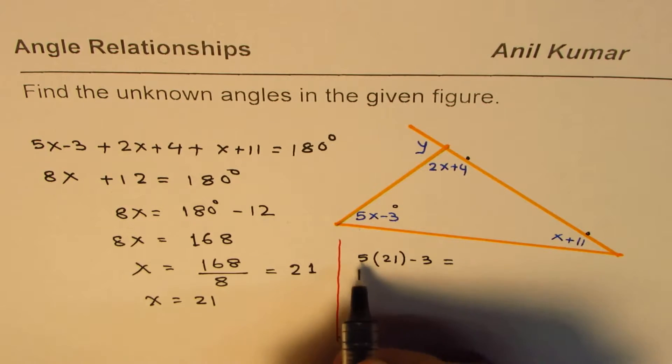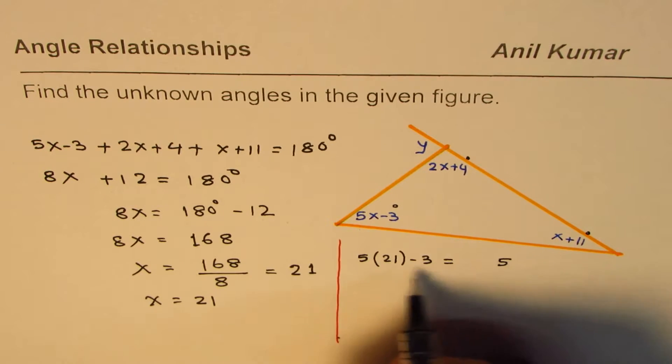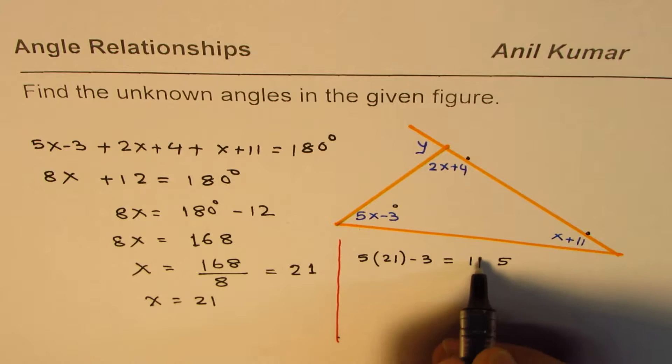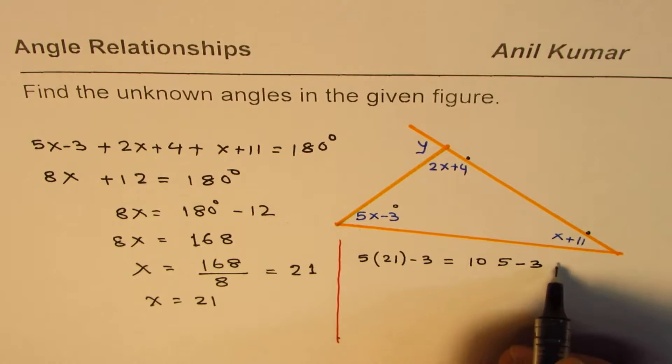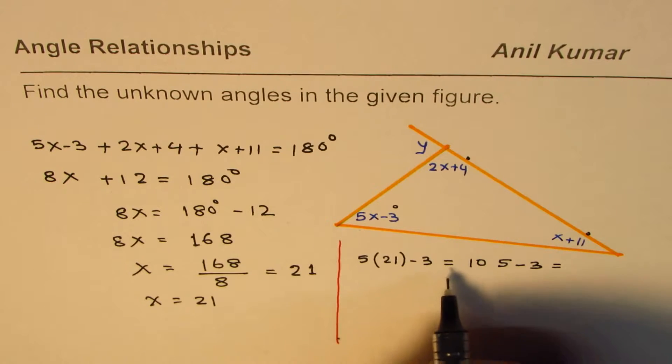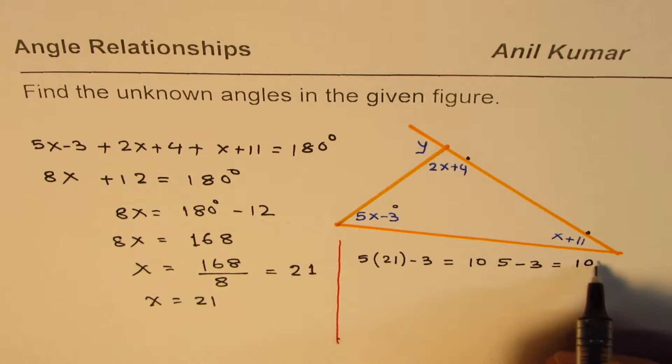So that gives you 5 times 1 is 5, and 5 times 2, 10, 105 minus 3, so it doesn't quite look like that, but anyway, it is 102 degrees.